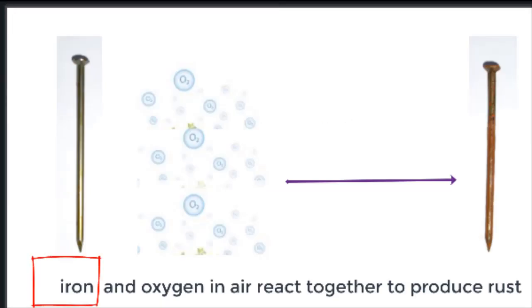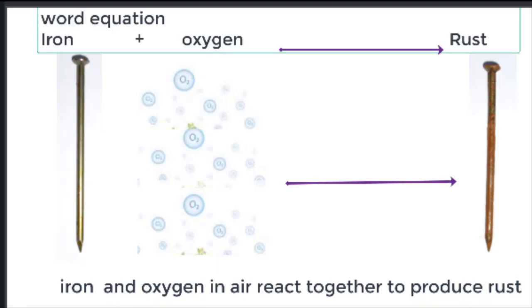As another example, iron and oxygen are the reactants, and rust is the product. Then the word equation would be iron plus oxygen, arrow, rust.